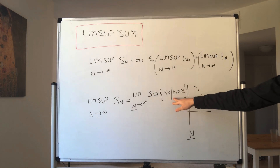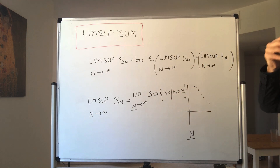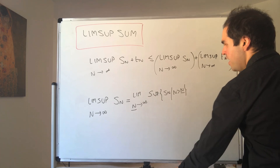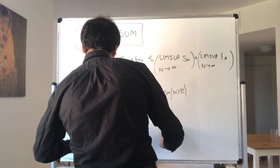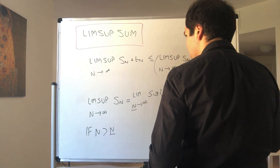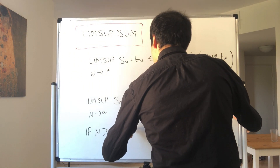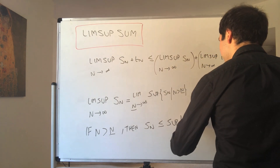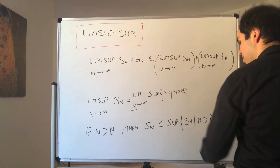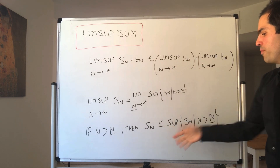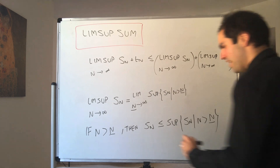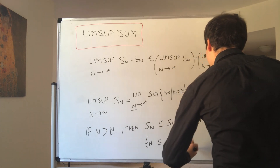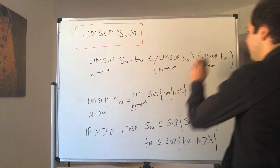In particular, we need to consider those sets where N is bigger than capital N. Notice the following: if N is bigger than capital N — because that's what we want to consider — then Sn is less than or equal to the sup after capital N, because any number is smaller than the largest of all those numbers. And also Tn is less than or equal to the sup of Tn where N is bigger than capital N. Then just add them up.